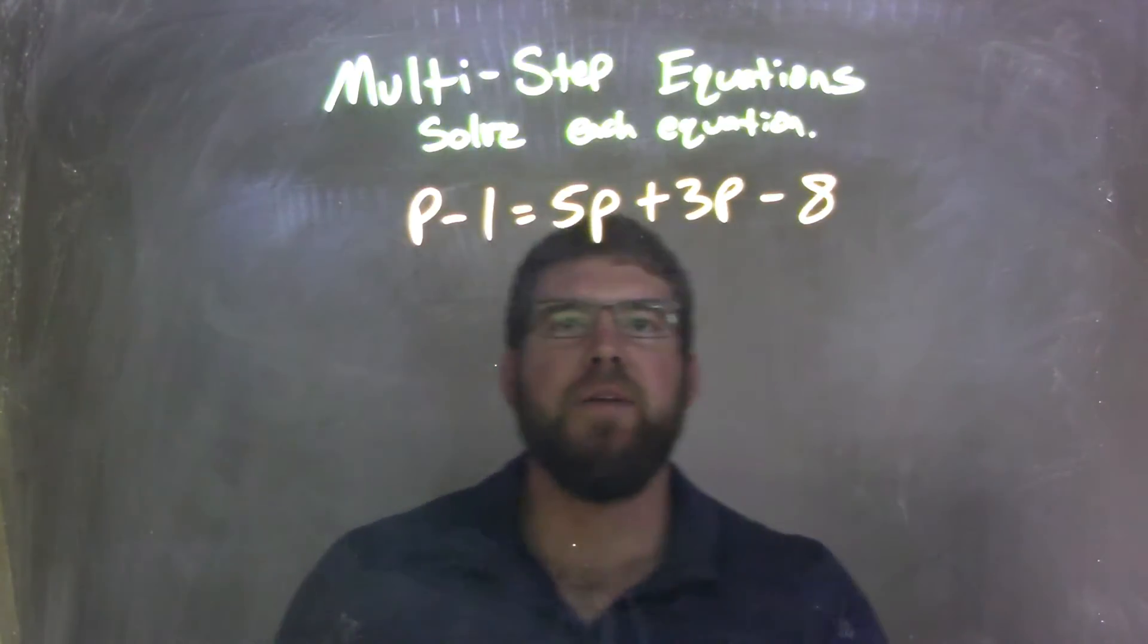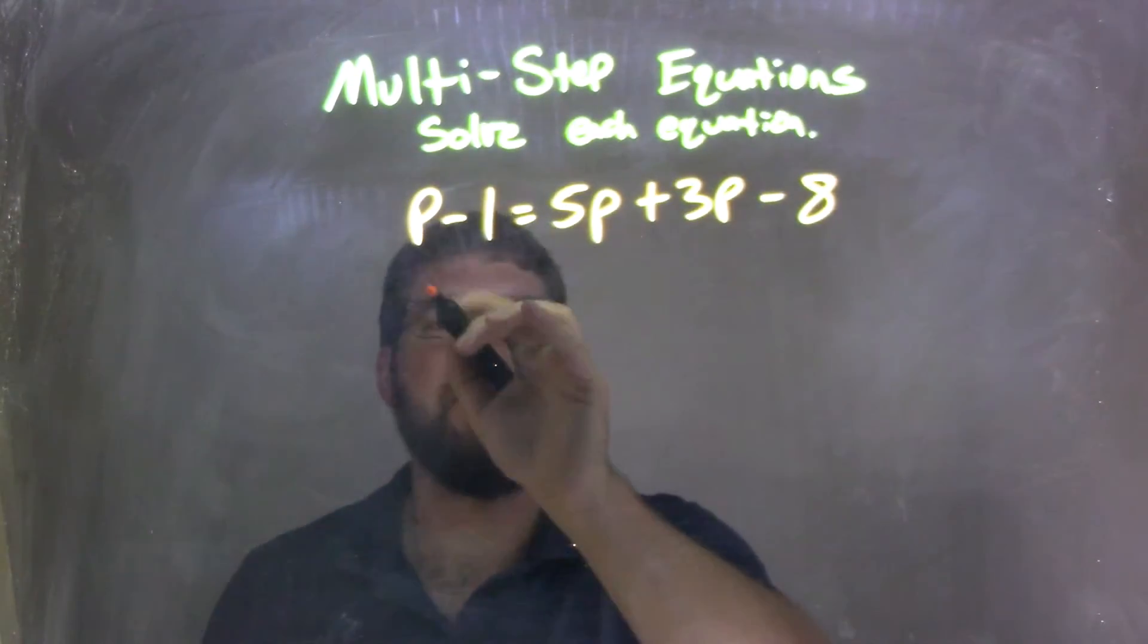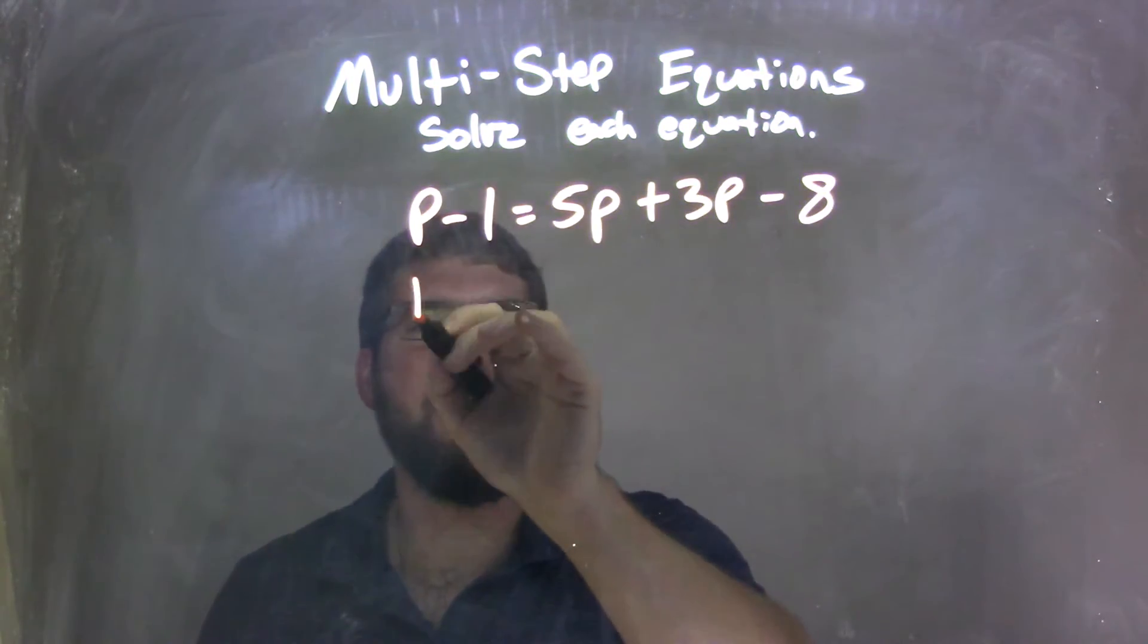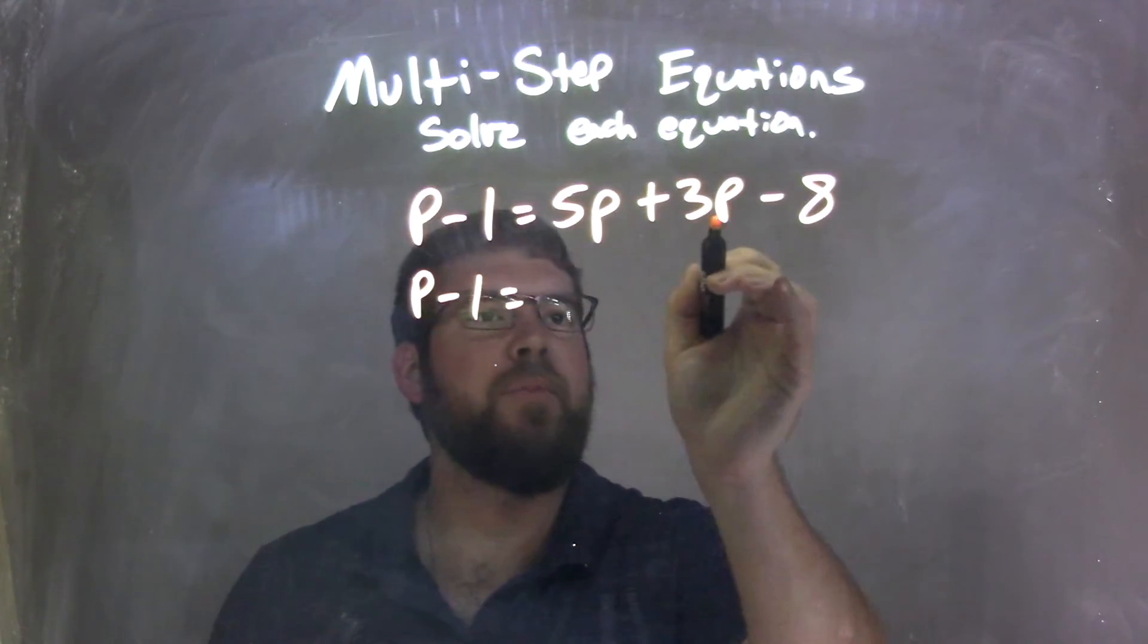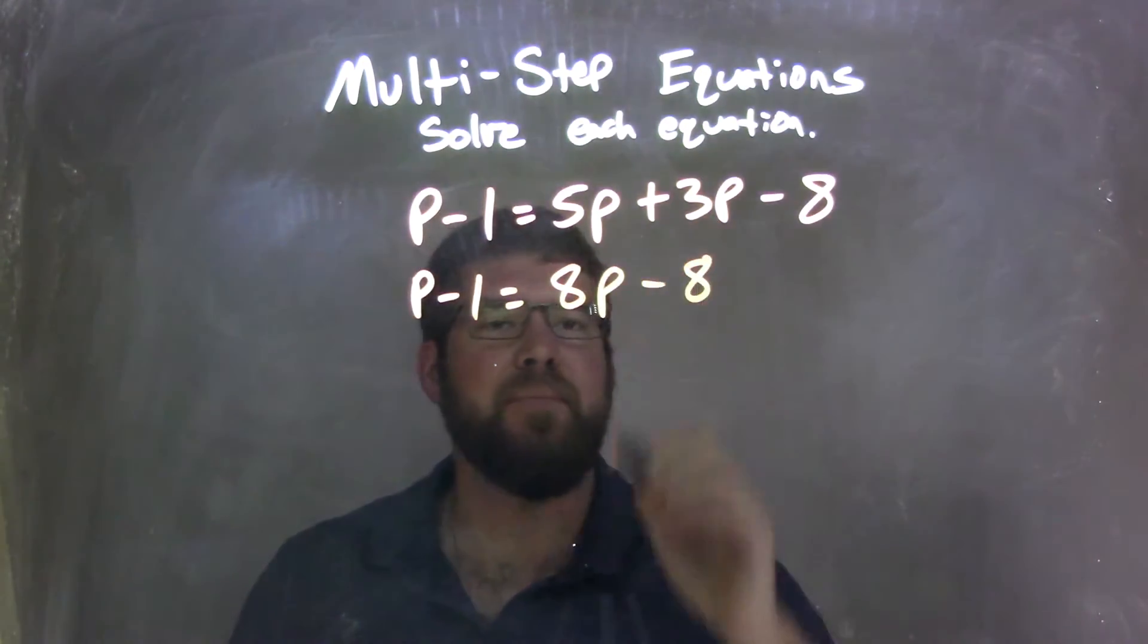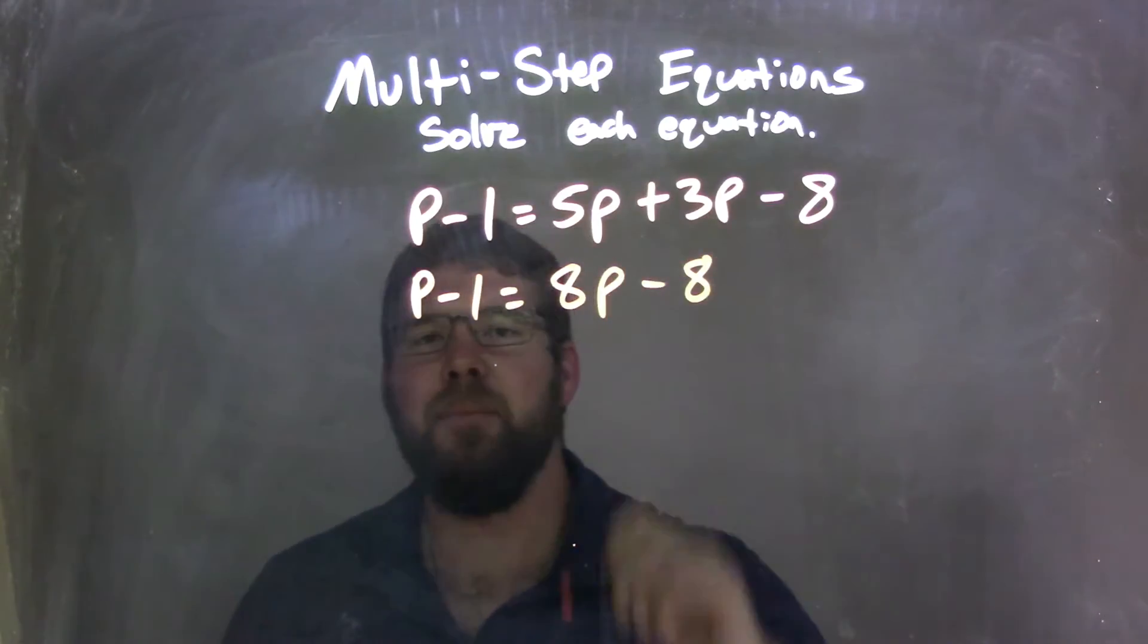Well, my first step here is I'm going to combine my like terms on each side of the equal sign. So there's nothing left here that we can combine, p minus 1, but 5p plus 3p can be 8p minus 8. So bring out that minus 8.